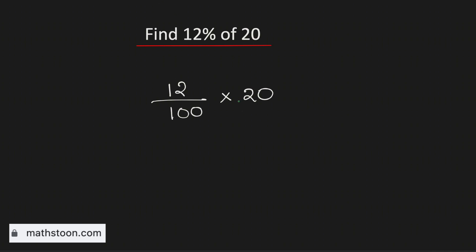We know that 20 goes into 100 by 5, therefore this is now equal to 12 divided by 5.